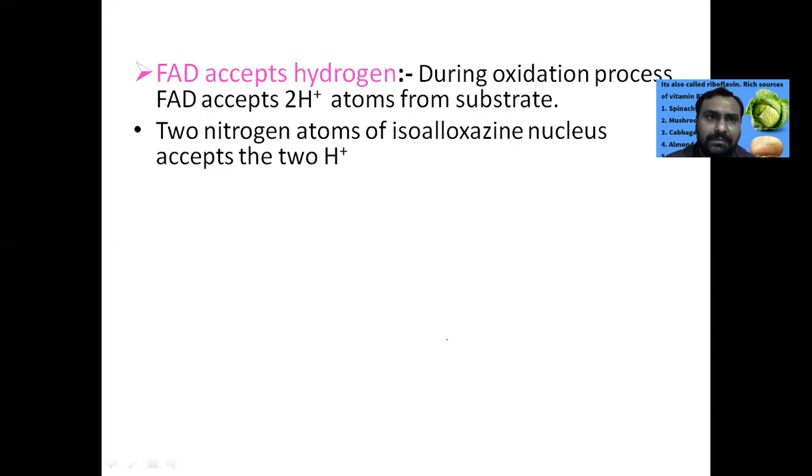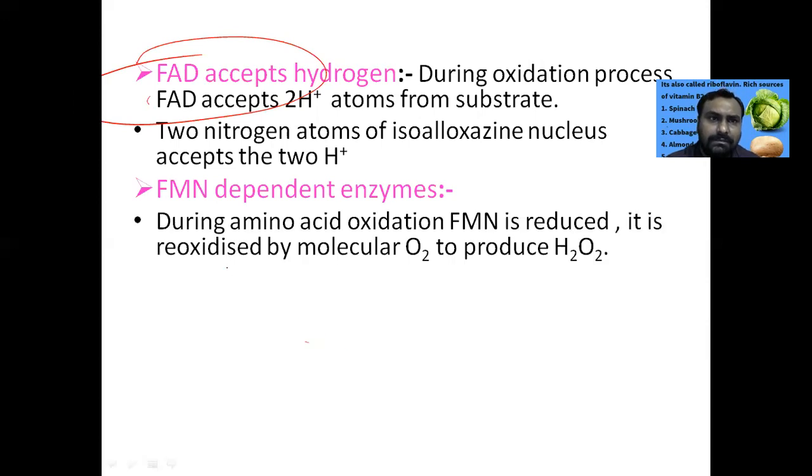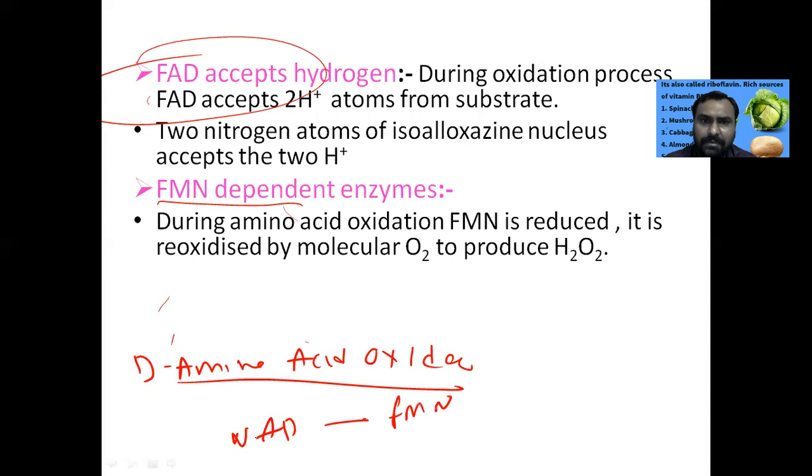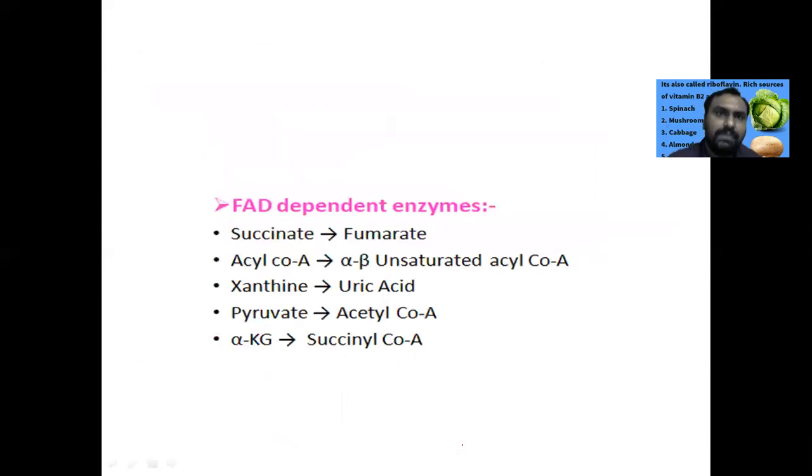This FAD will accept two hydrogens. We will see which reactions are mediated by FAD and which enzymes use FMN. FMN can be used for D-amino acid oxidase enzyme. In biological oxidation, electrons are transferred to NAD from FMN and then transfer to coenzyme Q.